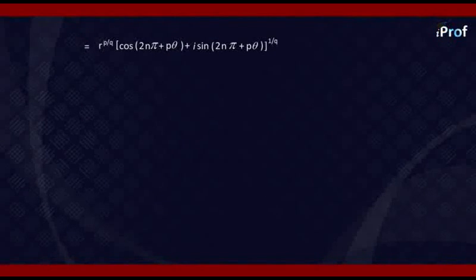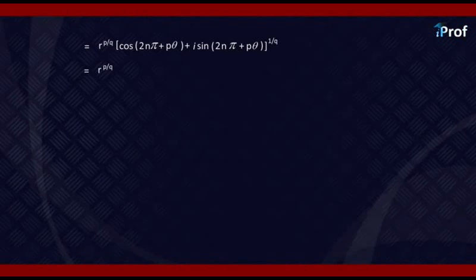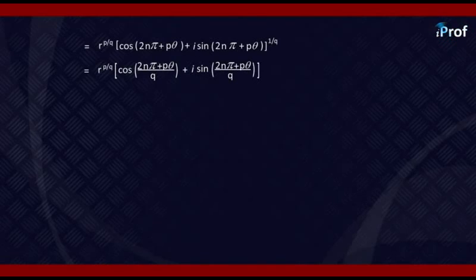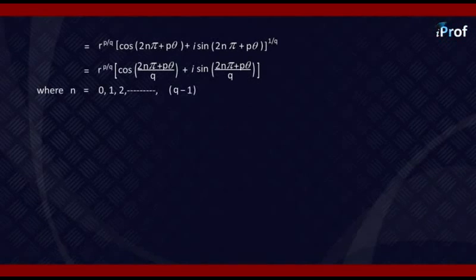So it becomes R raised to power P by Q. Now, using De Moivre's theorem again, we get cos of (2n pi plus P theta) upon Q plus i sine of (2n pi plus P theta) divided by Q, where N can take any of the values 0, 1, 2, 3, 4 up to Q minus 1. Thus, we get exactly Q different values.